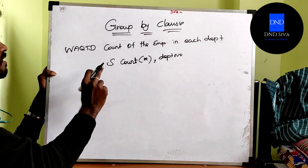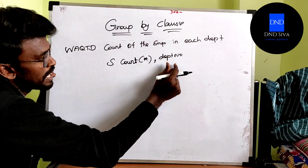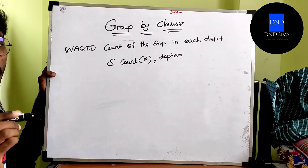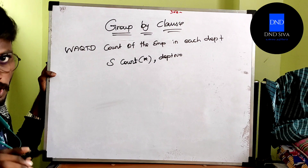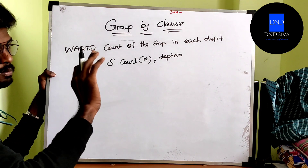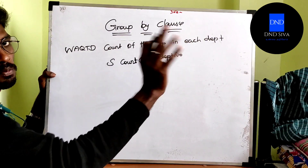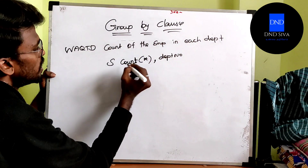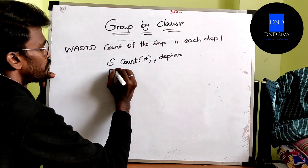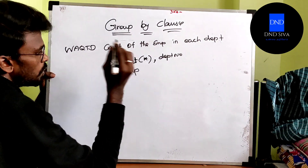We will use the class, then we will use multiple functions. We will use group by class. When we use group by class, we will use the class. Select COUNT of star, department number from table name. You can use the class.